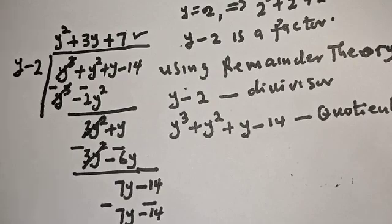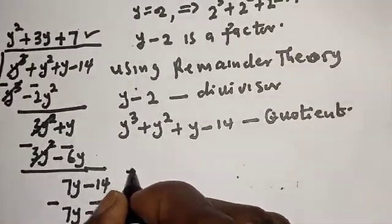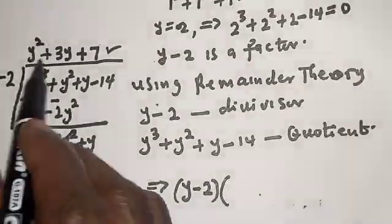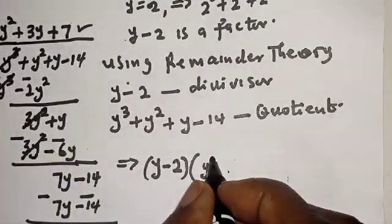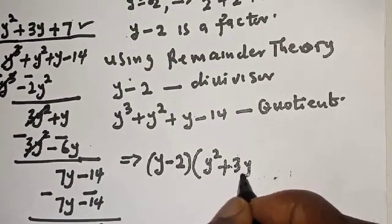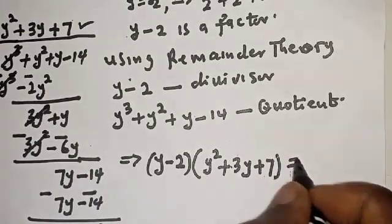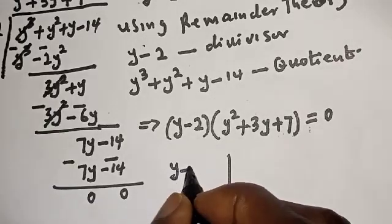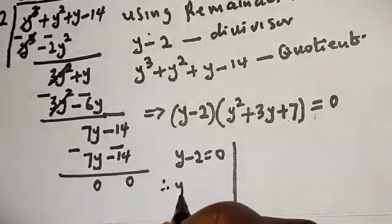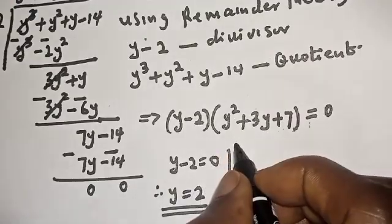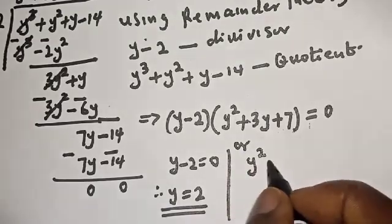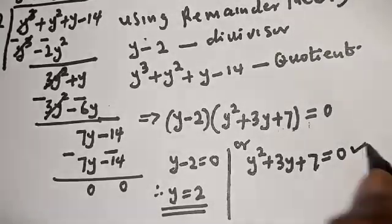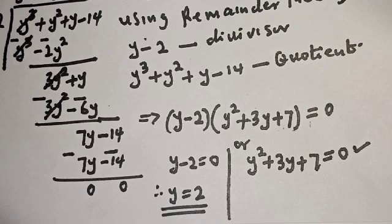So we have y minus 2 times y squared plus 3y plus 7 equal to 0. There are two cases. The first case is y minus 2 equal to 0, therefore y equal to 2. The second case is y squared plus 3y plus 7 equal to 0, which is a quadratic equation that can be solved using the quadratic formula.